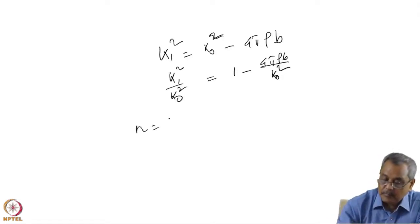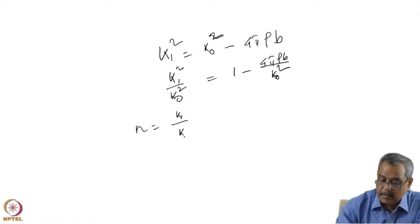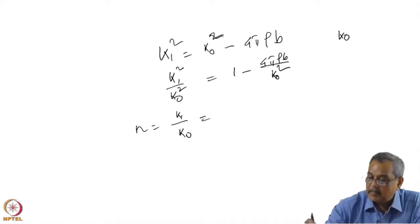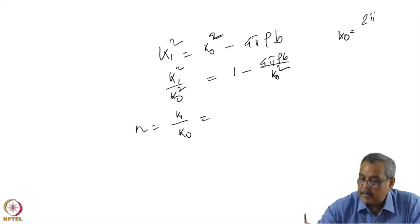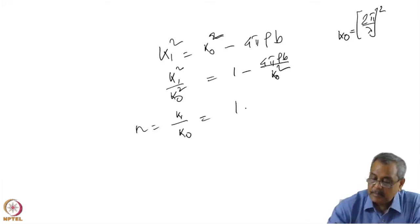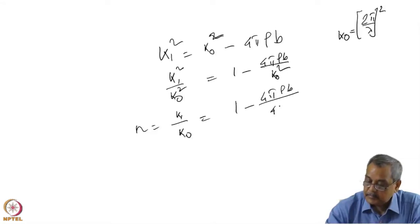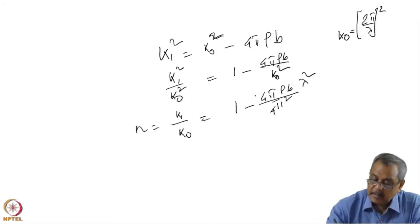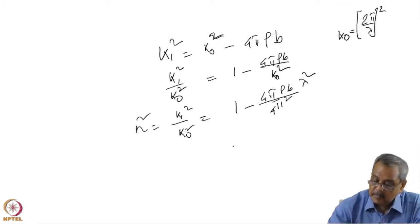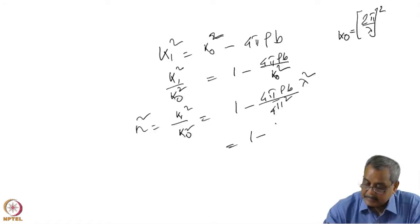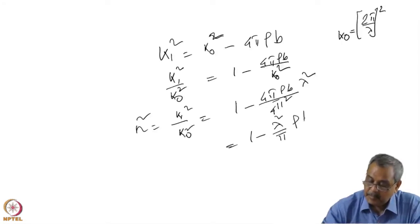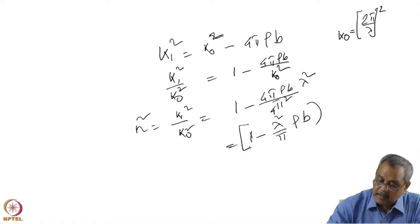So n equals k1 in the medium divided by k0, where k0 in the vacuum is given by 2π divided by λ. Substituting, we get n squared equal to 1 minus 4π·ρB divided by 4π²λ², which simplifies to n squared equal to 1 minus λ²·ρB divided by π.